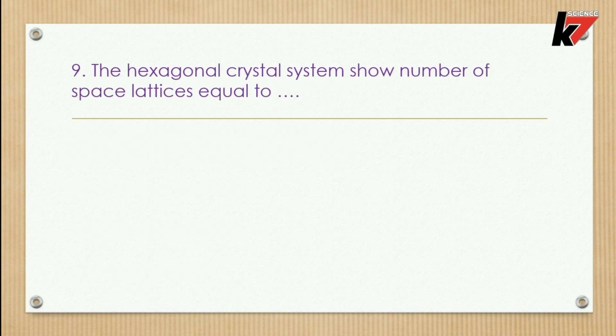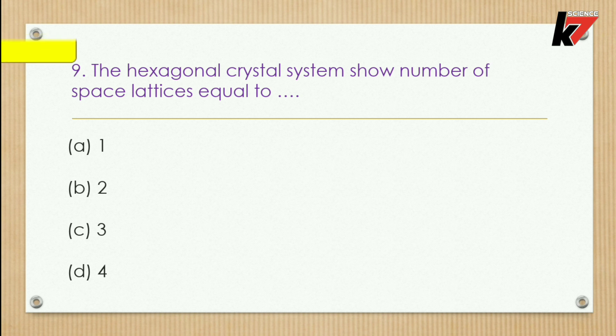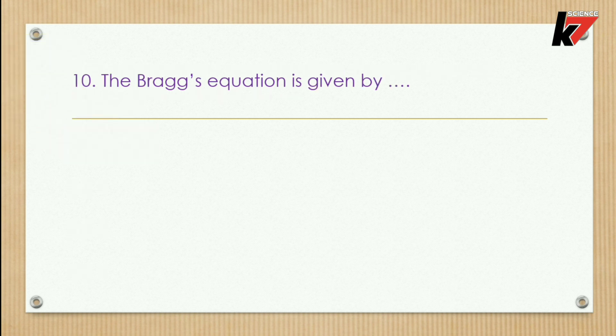Question 9: The hexagonal crystal system shows a number of space lattices equal to — options: 1, 2, 3, or 4. The correct option for the hexagonal crystal system is 1, option number one.